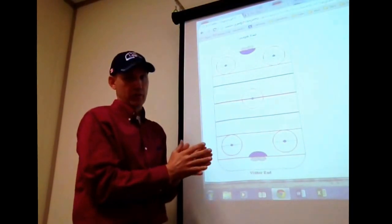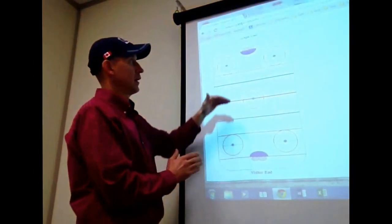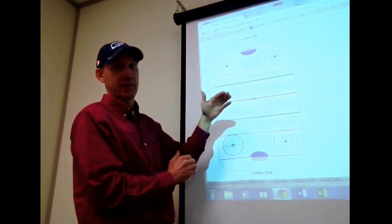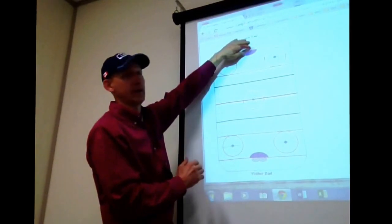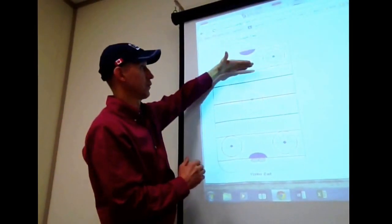Some information you'll need to know about that is when we are playing regular strength, meaning that there's no penalties, each team is only allowed three players inside of that line. So basically if this was our end, we would be allowed three players from the red line, the free play line back.